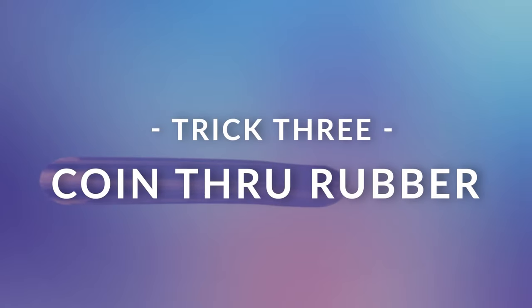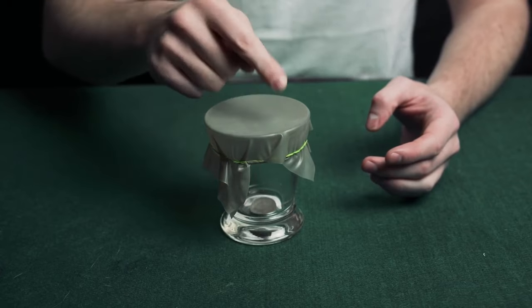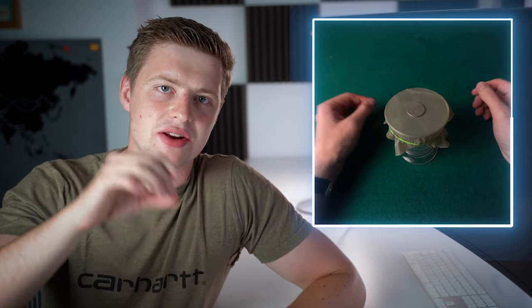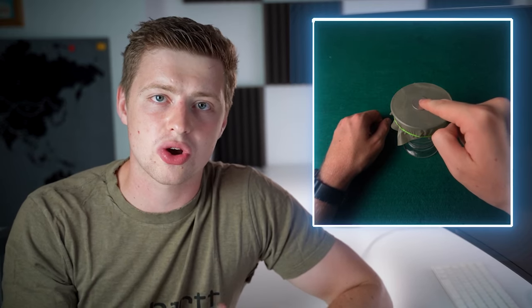So trick number three is coin through rubber and you're in for a real treat here because as I've mentioned many times in this video already, this is my favorite close-up coin trick ever. So before I teach you how it's done I just want to show you what it looks like. So this is what the effect looks like. You've got a glass, a bit of rubber and a coin on top of the rubber. Everything can be shown around completely fair and then you get the spectator to take their finger and press down on the coin and it penetrates straight through the rubber.